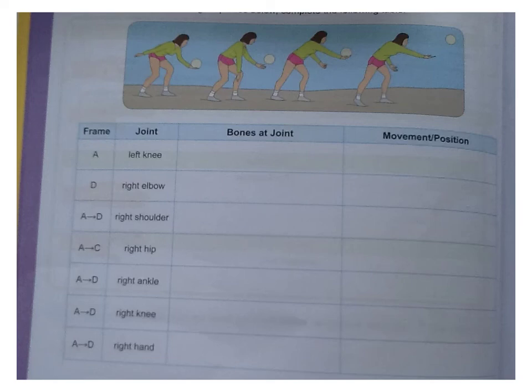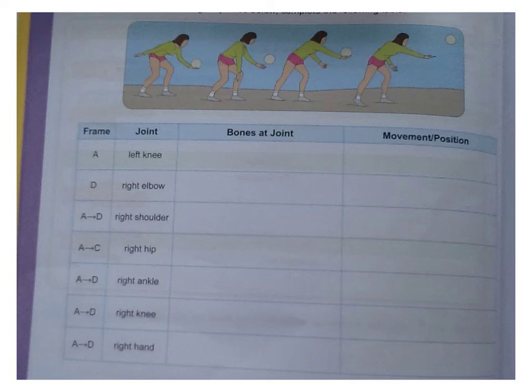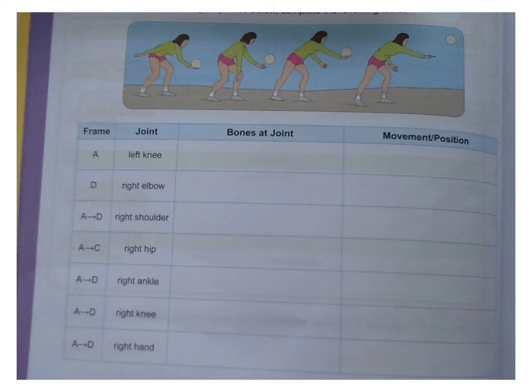Now use the volleyball serving sequence that is in your book and complete the following table. Label each picture from left to right: A, B, C, and D. Frame A is the person preparing to serve the volleyball, and frame D will be the last frame. Label those frames as they aren't labelled in the picture — that will make it easier. For example, for frame A we're looking at the knee joint. The bones at the knee joint are the femur and tibia, and the movement or position of the knee joint is flexion. Now complete that table yourselves.